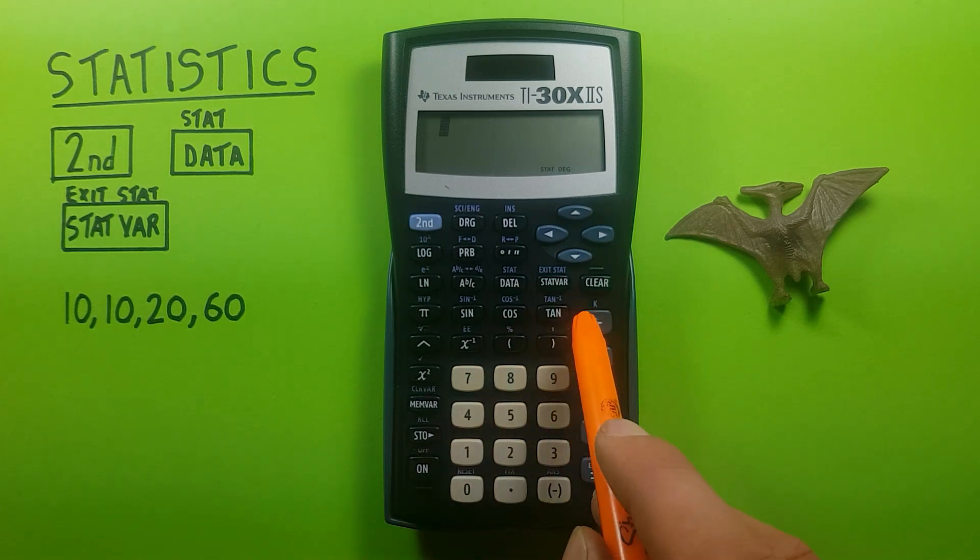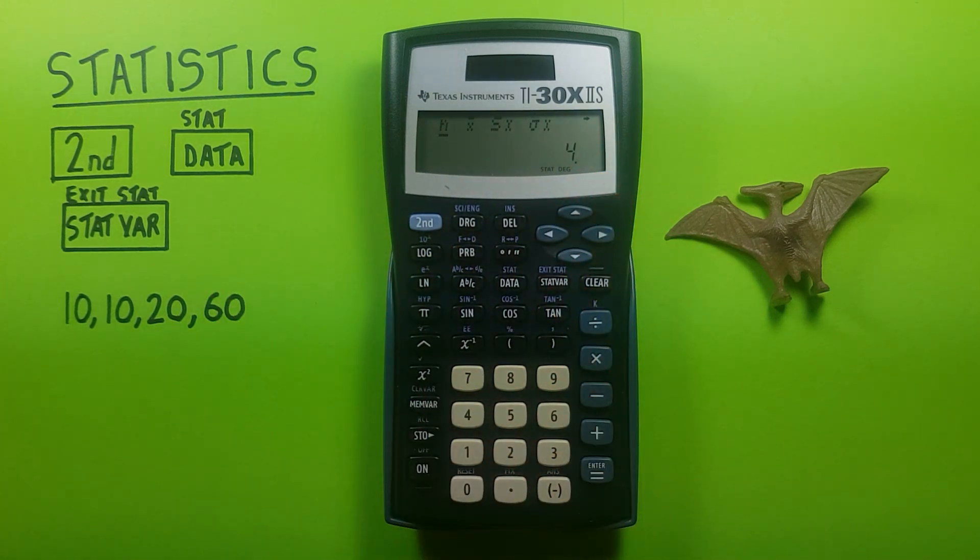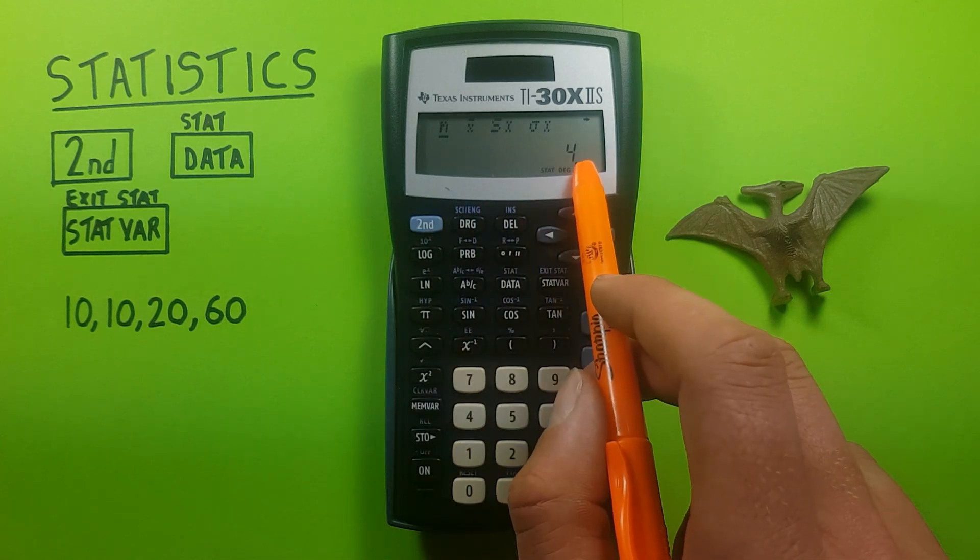To view them, we press the stat var key, and that brings up this screen. This displays all the statistics we have. So first one is n, or the number of variables in our data set. 1, 2, 3, 4. Yep, that's correct.